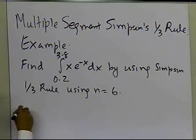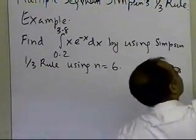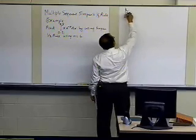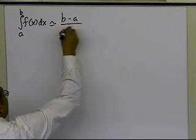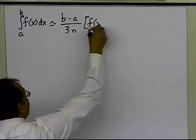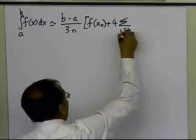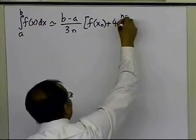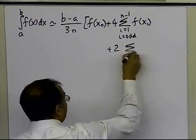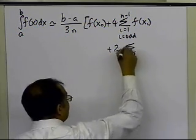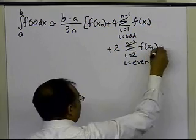Going back to the general formula, let me write it down: the integral from a to b of f(x) dx is approximately equal to (b minus a) divided by 3n, times f(x0), plus 4 times the summation from i=1 to n-1 where i is odd of f(xi), plus 2 times the summation from i=2 to n-2 where i is even of f(xi), plus f(xn).